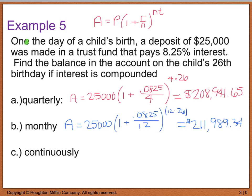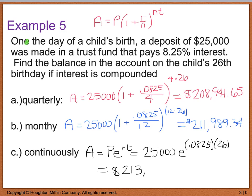And then last but not least, we want to know how much we'll have after 26 years if we're compounding continuously. Well, with continuous compounds, we're going to use the PERT formula. So I still have my $25,000 or my initial amount. I'm going to use my natural base E and my rate of 0.0825 and my T of 26 years. When I plug this into my calculator, we end up with $213,551.03.